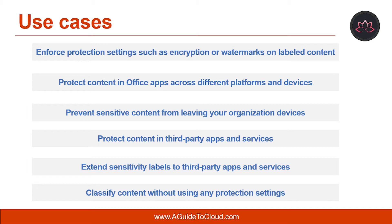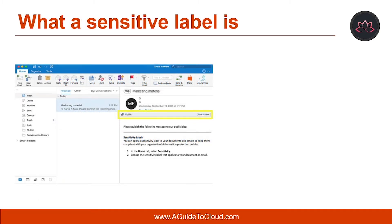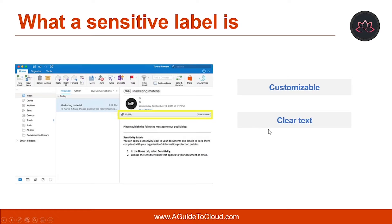Based on this information, you can always choose to apply protection settings later. When you assign a sensitivity label to a document or email, it's like a stamp that is customizable, so you can create categories for different levels of sensitive content in your organization such as personal, public, general, confidential, and highly confidential. The label is stored in clear text in the content's metadata, so third-party apps and services can read it and apply their own protective actions if required. Finally, it is persistent — after you apply a sensitivity label to content, the label is stored in the metadata of that email or document, meaning the label roams with the content including the protection settings, and this data becomes the basis of applying and enforcing policies.